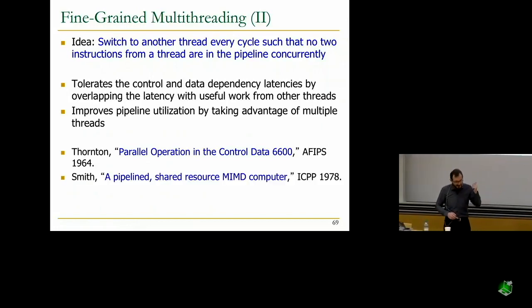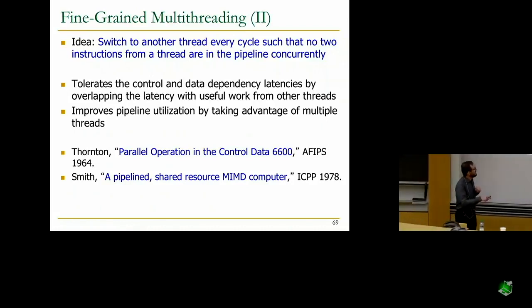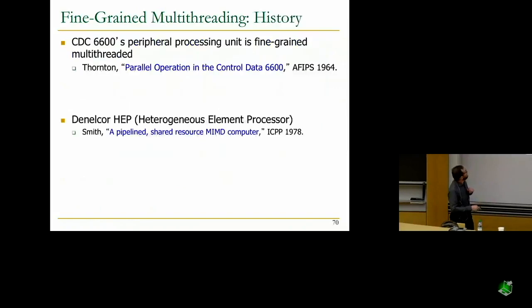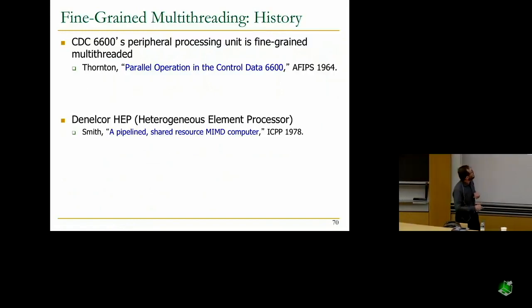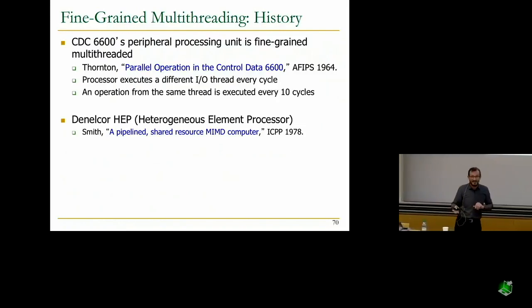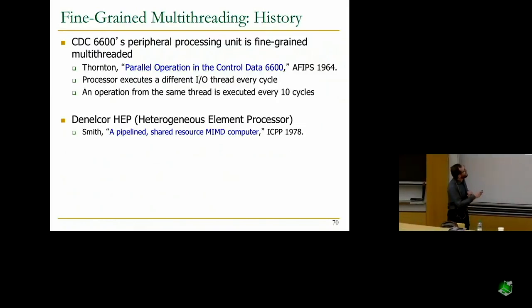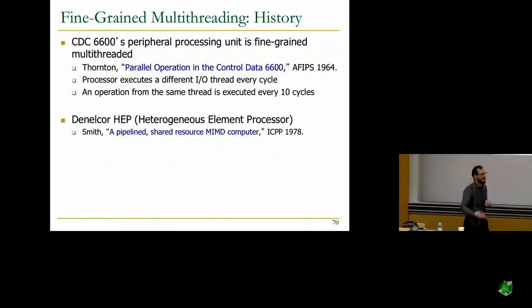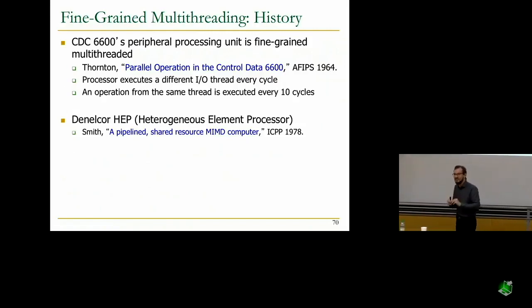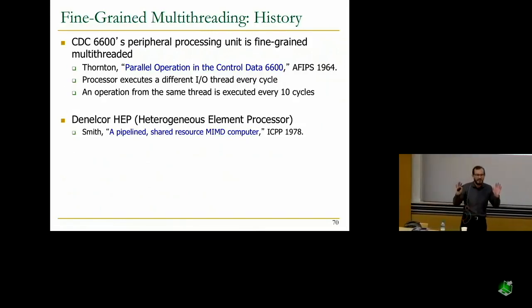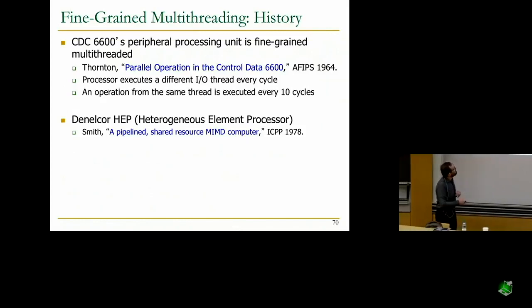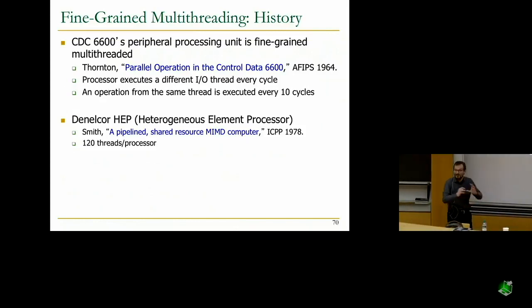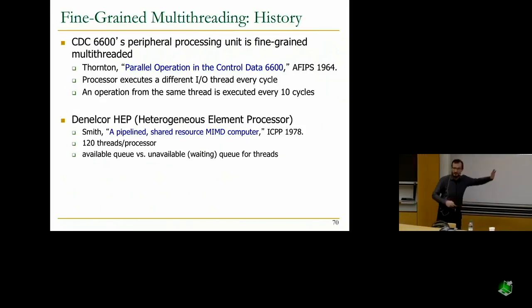Burton Smith, who unfortunately passed away recently, developed a lot of these ideas and built machines that operate on these principles. The CDC 6600 has fine-grained multi-threaded pipelines: a processor executes a different I/O thread every cycle, starting a different memory access each time — these are called I/O threads. An operation from the same thread is executed every 10 cycles, keeping the pipeline full with different threads and eliminating the need for dependency checking. It had 120 thread contexts per processor, similar to what GPUs will do.